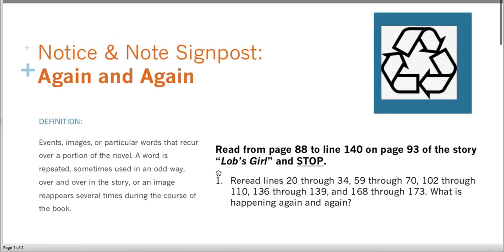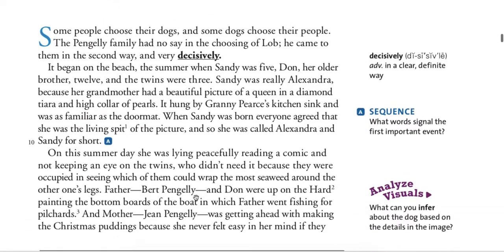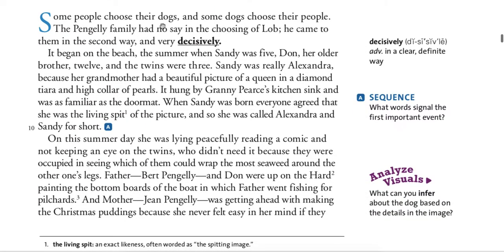So we're going to start on page 88 and read to line 140 on page 93. Lob's Girl by Joan Aiken. Some people choose their dogs and some dogs choose their people. The Pingeli family had no say in the choosing of Lob. He came to them in the second way and very decisively.